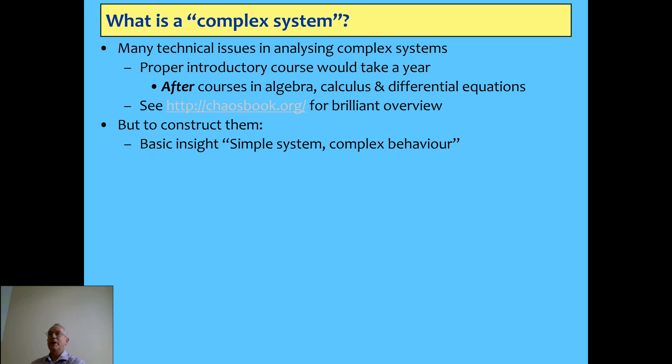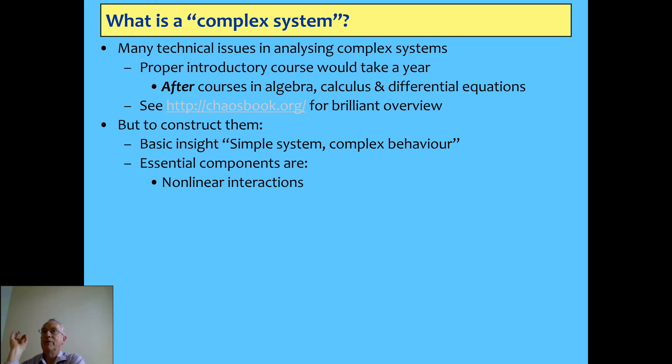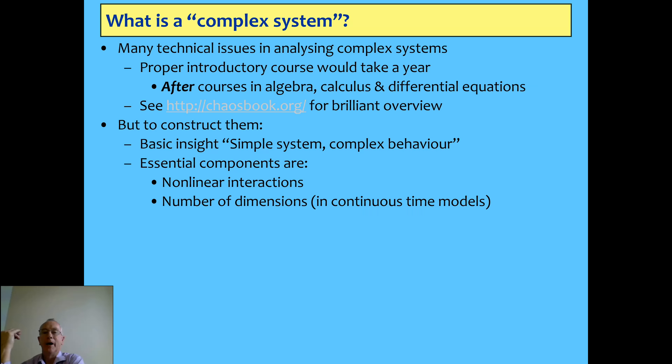For the basic insight: simple systems give you complex behavior so long as there are nonlinear interactions between them. The essential component you have to have is non-additive relationships — go beyond just adding things together. Of course, in econometrics you're always adding alpha plus beta-one times x plus beta-two times y, etc. But something multiplicative, or division, some nonlinear interaction, will give you the essence of a complex system.